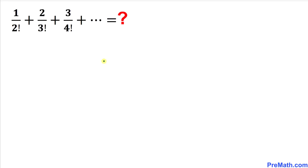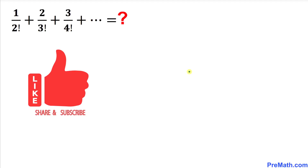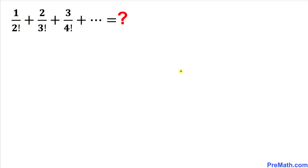Welcome to Pre-Math. In this video we are going to find the sum of this infinite series: 1 divided by 2 factorial, plus 2 divided by 3 factorial, plus 3 over 4 factorial, and on and on. Please don't forget to give a thumbs up and subscribe. So let's go ahead and get started with the solution.